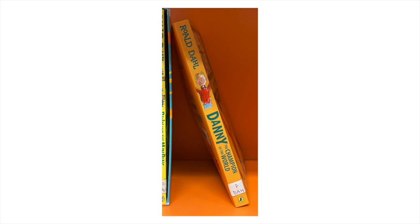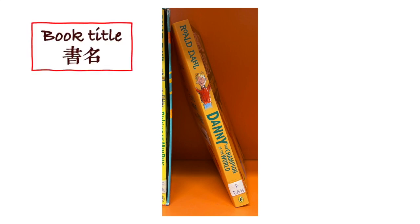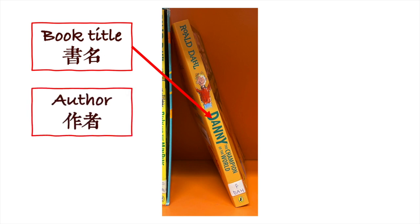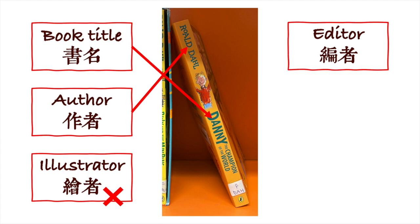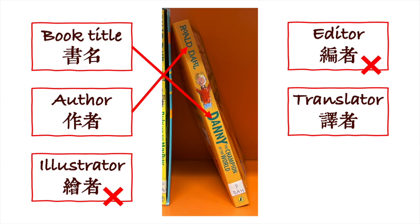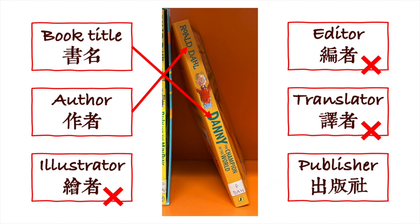Here is the book spine. Can you point to the book title? The book title is Danny the Champion of the World. How about the author? The author is noted. And then the illustrator — there is no illustrator on this book spine. And then the editor — no. Translator — no. And the last one, publisher: the Penguin logo is the logo of the publisher.